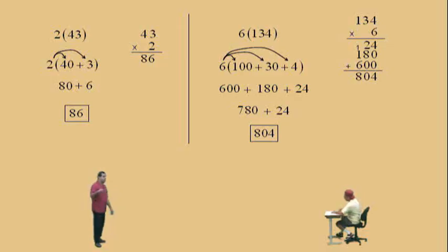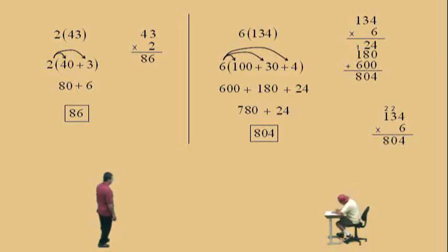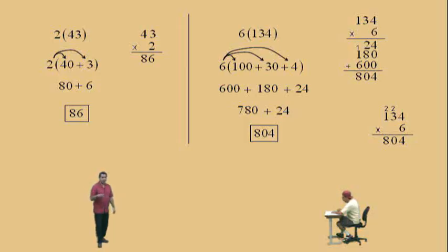Let's finish by doing the carry-over method. 6 times 4 is 24 — put the 4, carry the 2. 6 times 3 is 18, add the 2 is 20 — put the 0, carry the 2. And 6 times 1 is 6, plus 2 is 8, so 804. These vertical formats are all using the distributive property. That's your introduction to the distributive property. We're going to work on multiplication more in the future — keep up with your homework, and we'll see you all again soon.